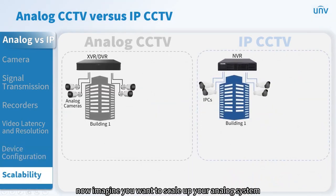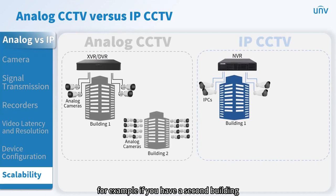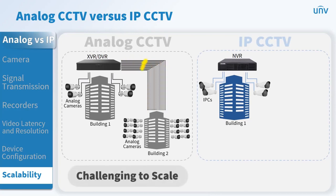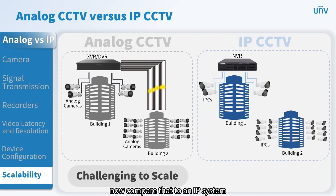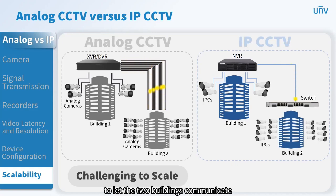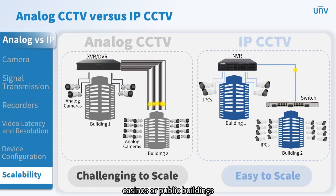If you want to scale up your analog system and add more cameras — for example, adding a second building and using one recorder for everything — you would have to run 16 cables from each camera back to the recorder. IP systems use addressable networks, meaning with the help of a switch, you only need one cable to let the two buildings communicate. For bigger installations like schools, casinos, or public buildings, IP systems would make much more sense.